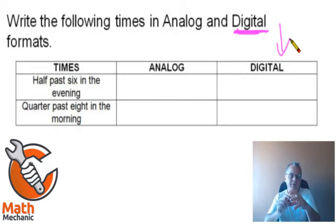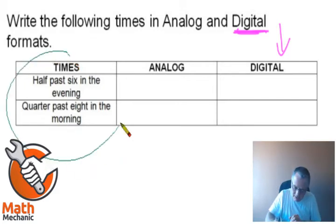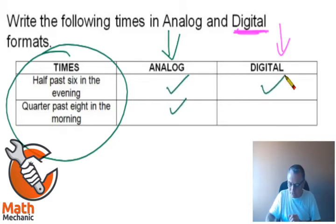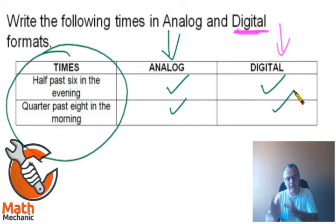So you also need to understand the difference between 24-hour and 12-hour digital time. This question, however, gives you the times in words, which is also a very important part of reading time. Then you need to draw a little clock face and put it in the analog block for that one and for that one, and then you also need to provide the digital times in that column.